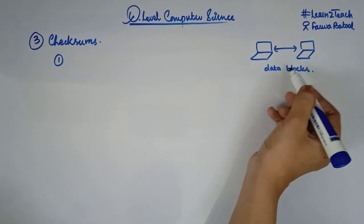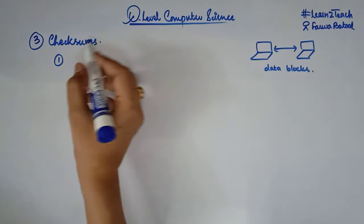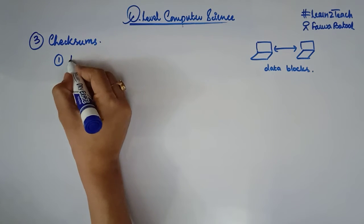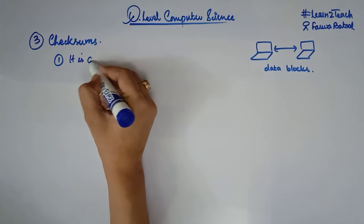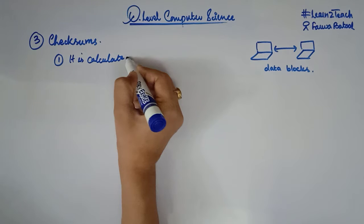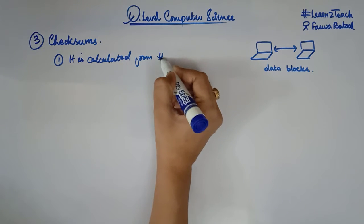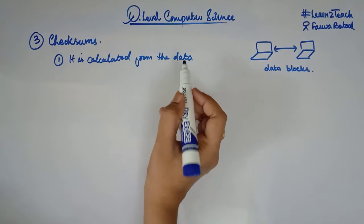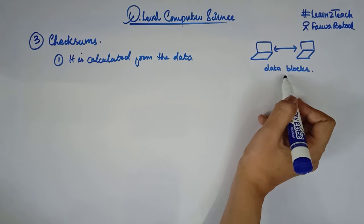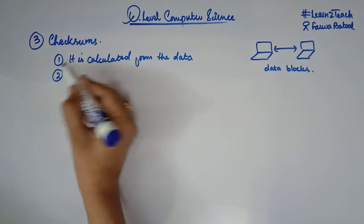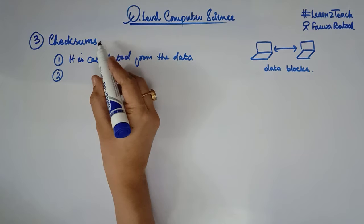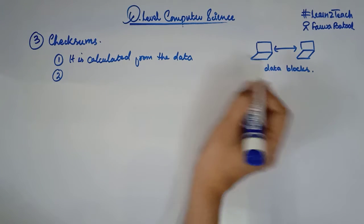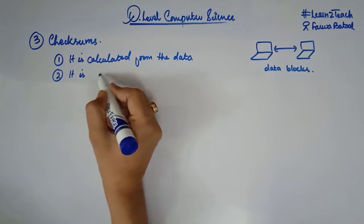The data is basically transferred in the form of bytes, and the checksum is calculated from the data. The data blocks or the data inside them help us calculate the checksum. The second thing is that the checksum is then transmitted along with these data blocks.